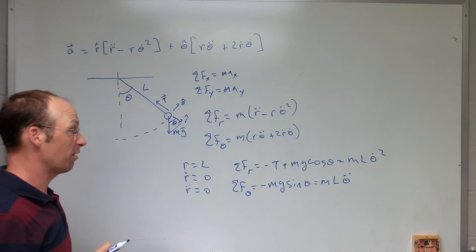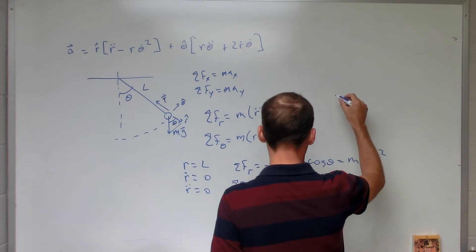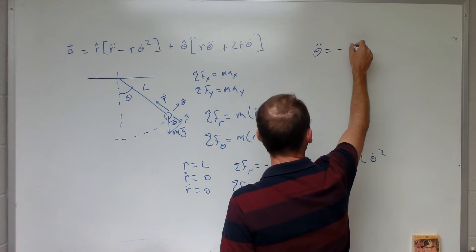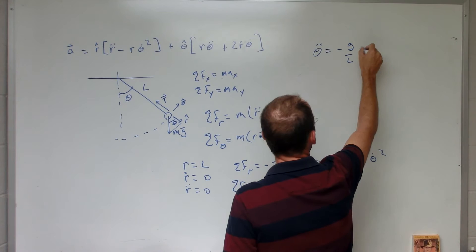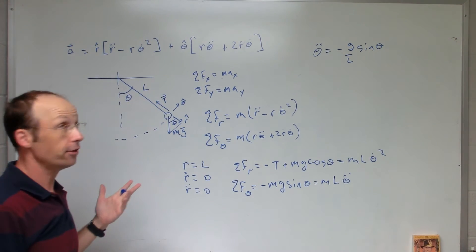Okay. So now I have an equation that's pretty easy. The mass cancels. I can solve this for theta double dot. Negative g over L sine theta. And that's your differential equation.